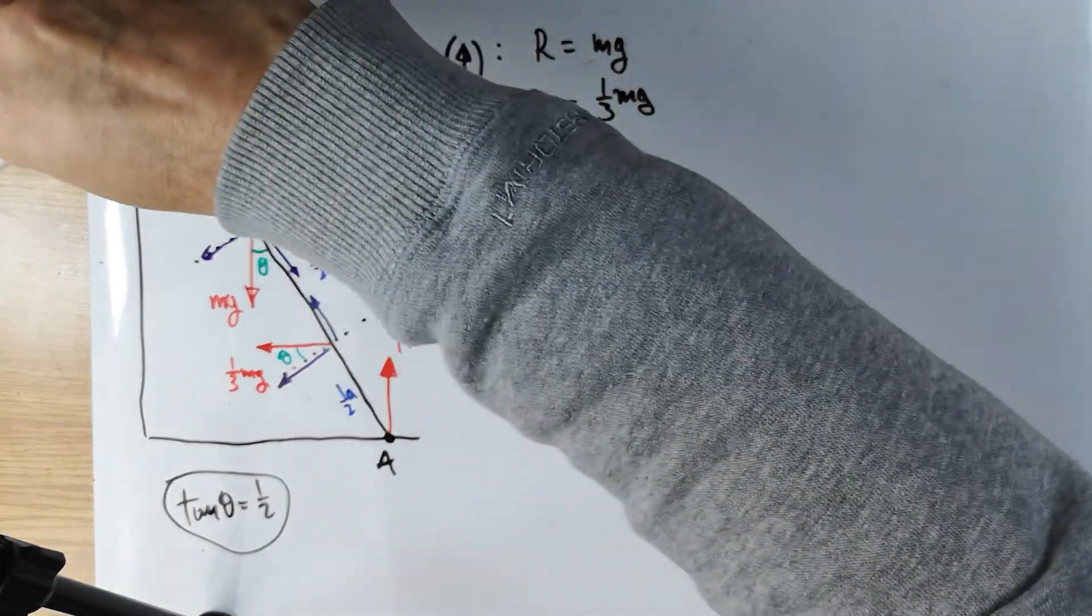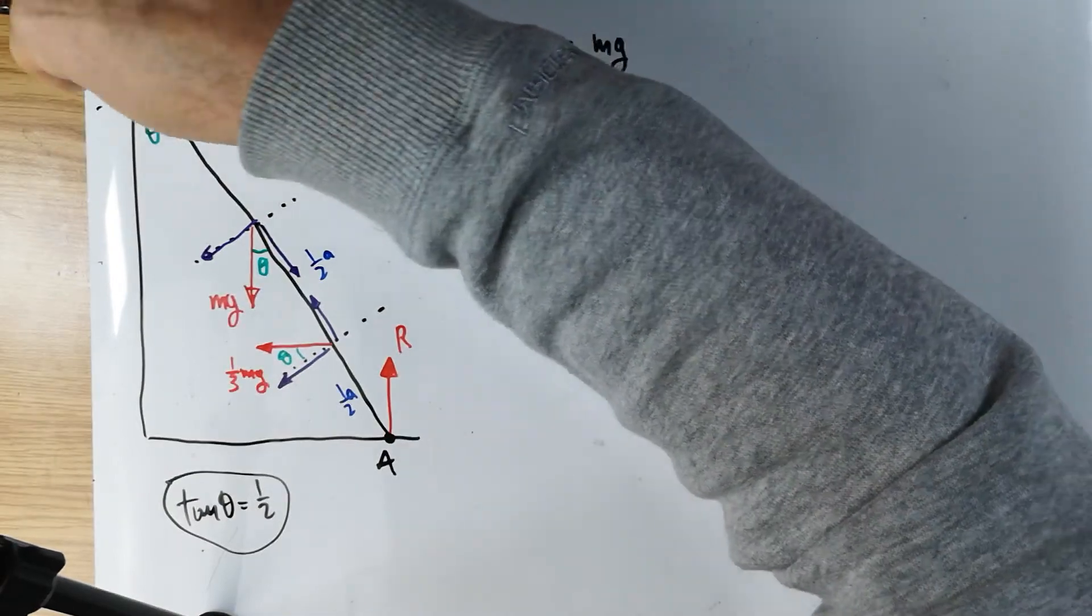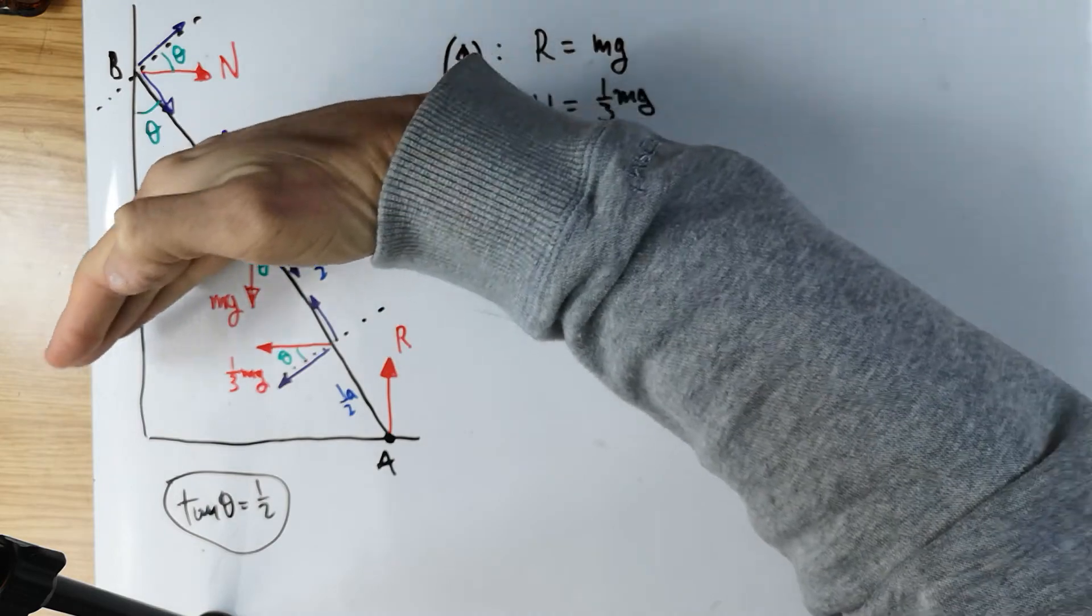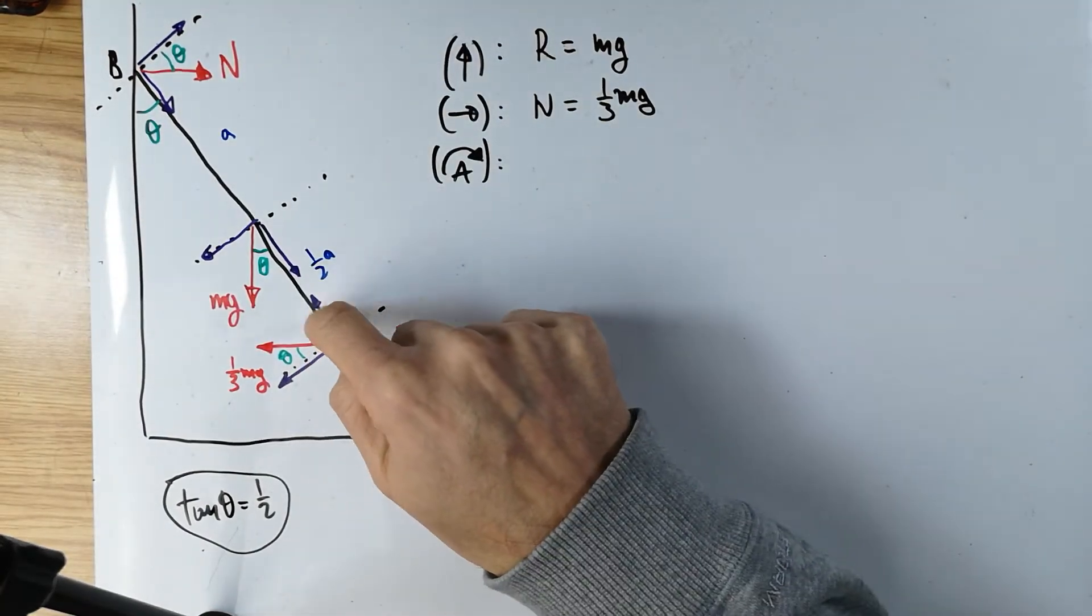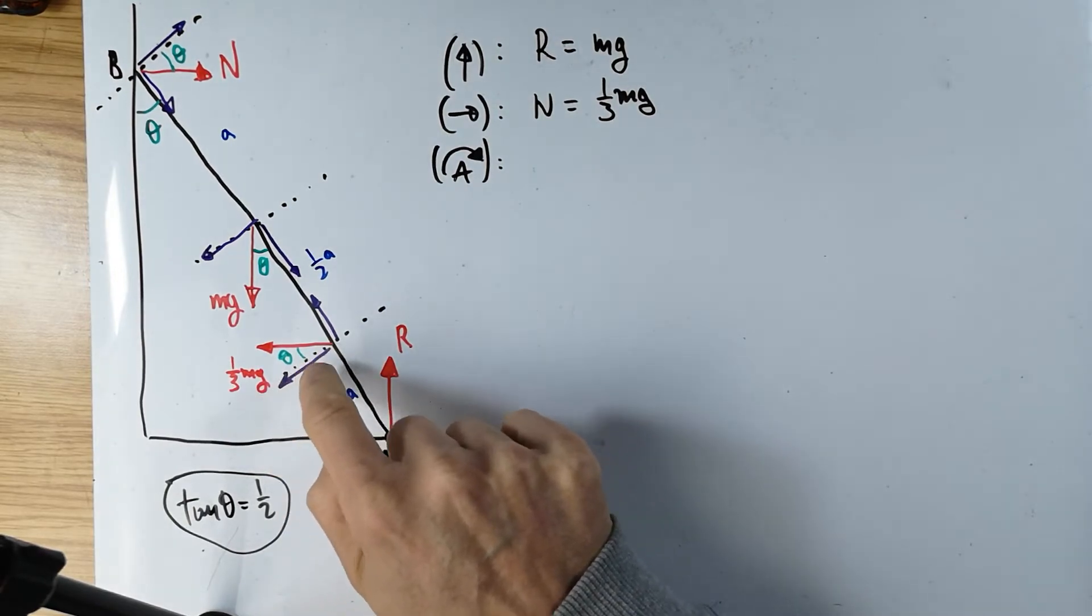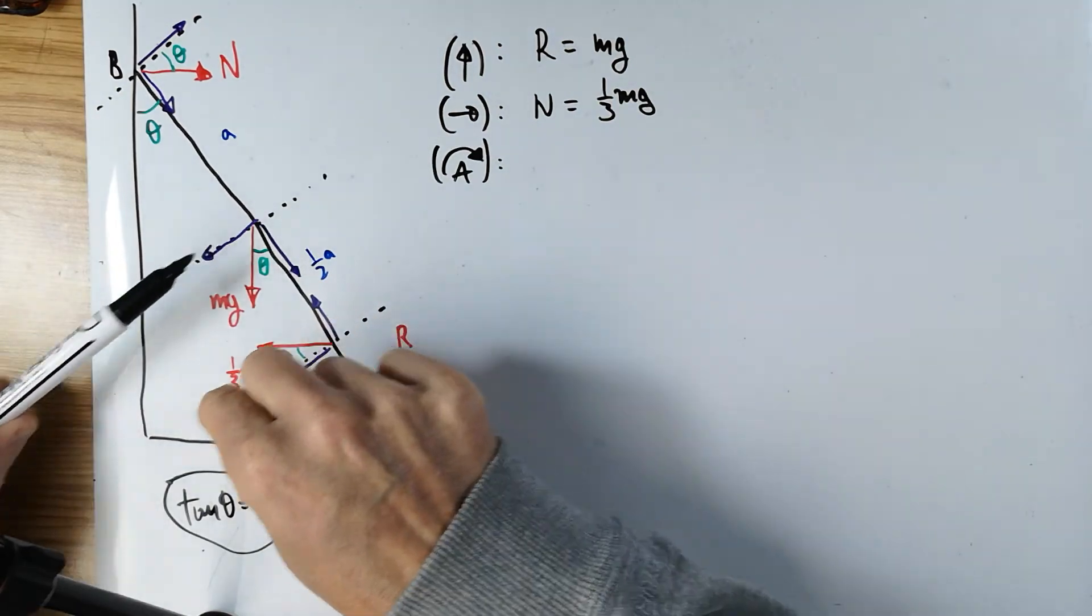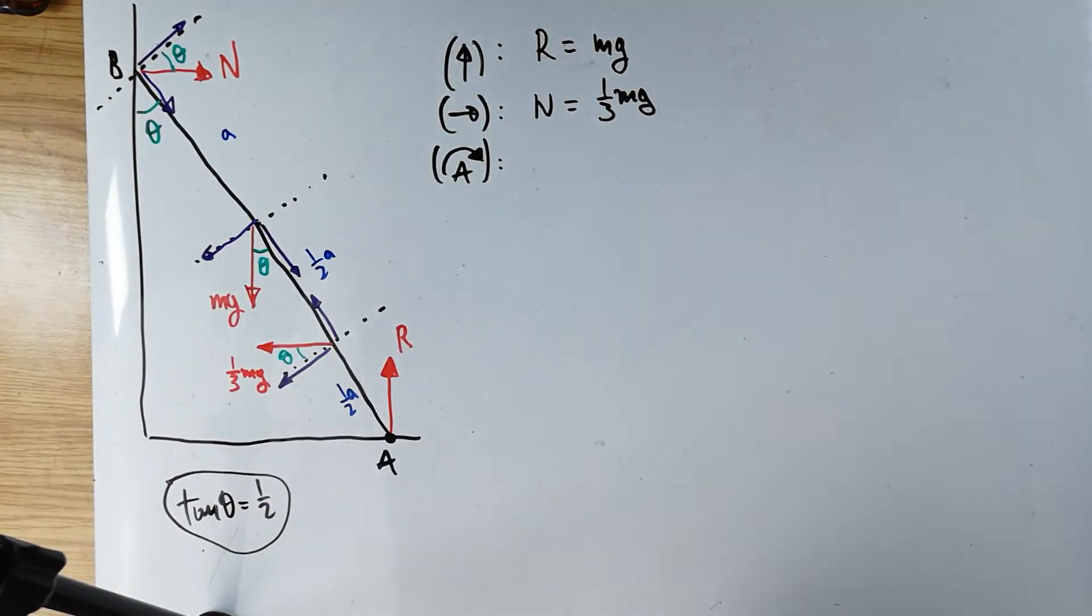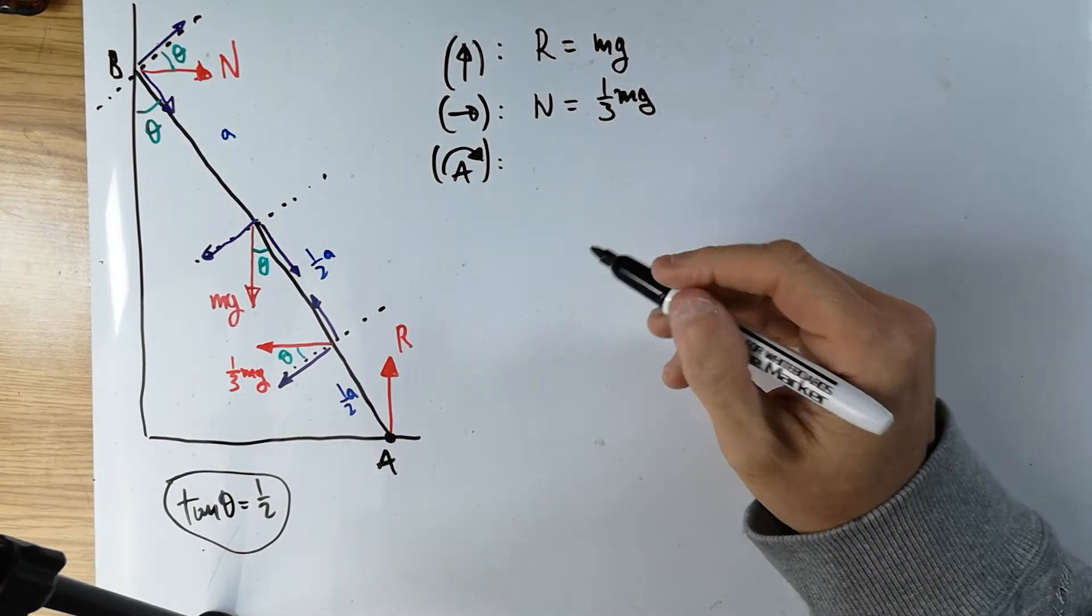So the only forces that have moment is the component of N, which is here, which is at right angles. The same way the component of Mg, which is at right angles, is pulling me in an anti-clockwise direction there. No moment for this one. However, this is at right angles, this purple one. And this is also working together with this one. So these two are pulling the ladder in this direction. So now we need to form this moments equation. Let's be careful and let's see what happens.